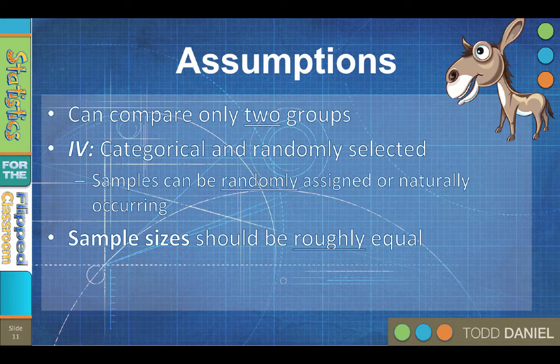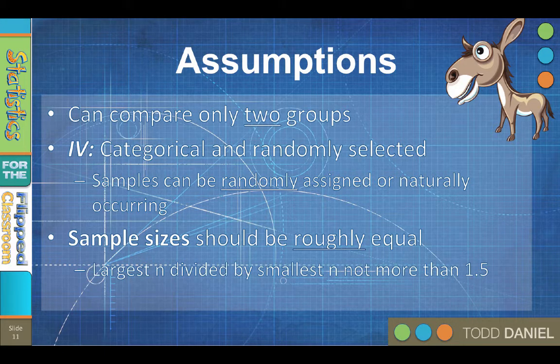So how equal is roughly equal? A good rule is that the larger sample size divided by the smaller sample size should not exceed 1.5, a roughly 60-40 split. So if 80% of your participants are in one group and 20% are in the other, or worse, 90-10, you need to fix that.